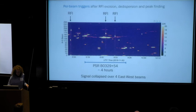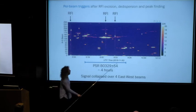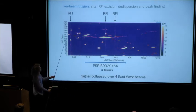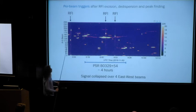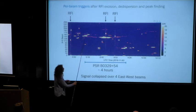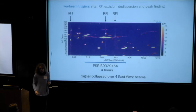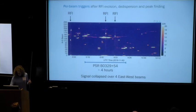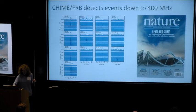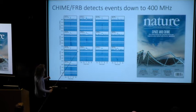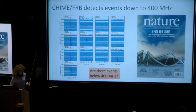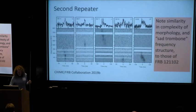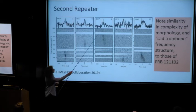Here is a time view of the sky — time on the x-axis, north-south beam on the y-axis, equivalent to declination. Pulsars traverse the primary beam at fixed declination, like the bright pulsar B0329+54. We showed FRBs go down to 400 megahertz in our first results — the first 13 events — with some going right down to 400 MHz. There are all sorts of interesting morphologies, and an interesting open question: are there FRBs below 400 MHz? We can't answer that. CHIME also found the second repeater.